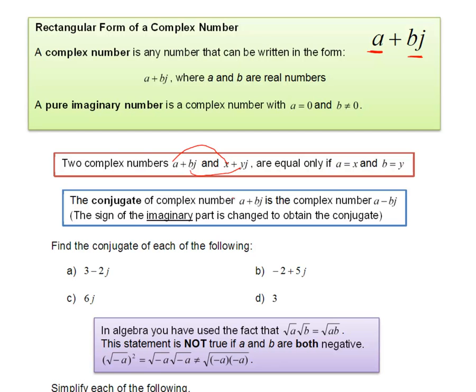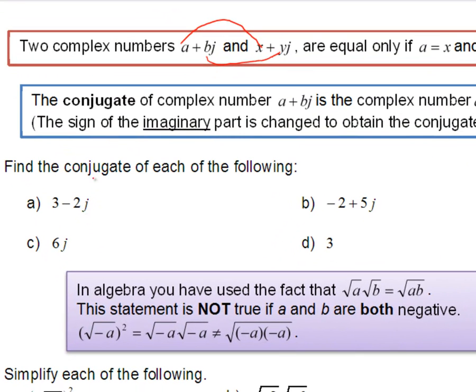The conjugate of a complex number is something that we are going to have to use periodically. The conjugate refers to changing the sign of the imaginary portion of the complex number. So in this instance, a plus bj would, the conjugate is a minus bj. So only the imaginary part is changed. In this first example, we just want to find the conjugate of each of the following.